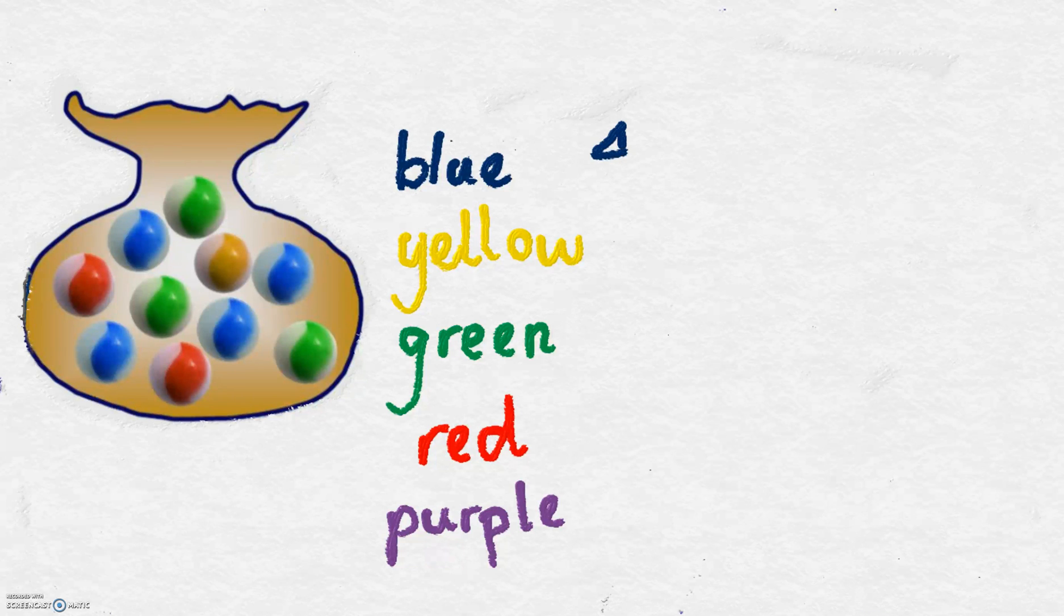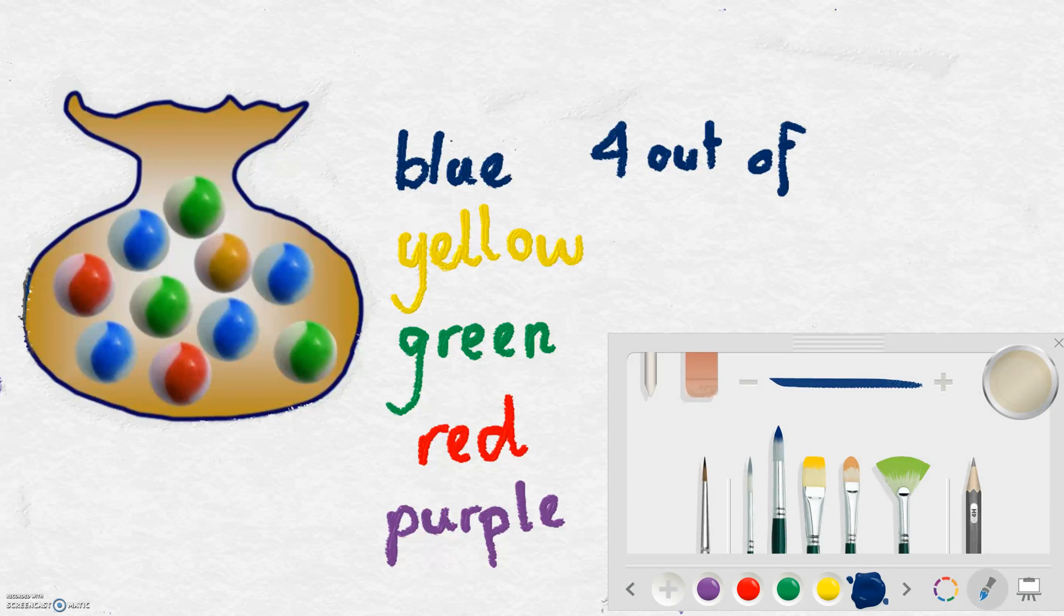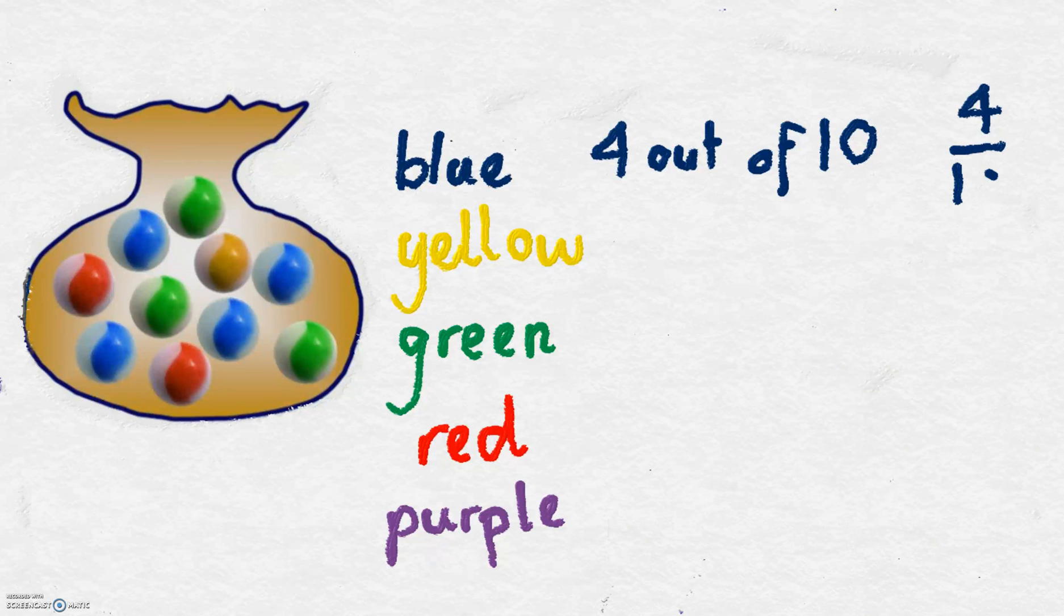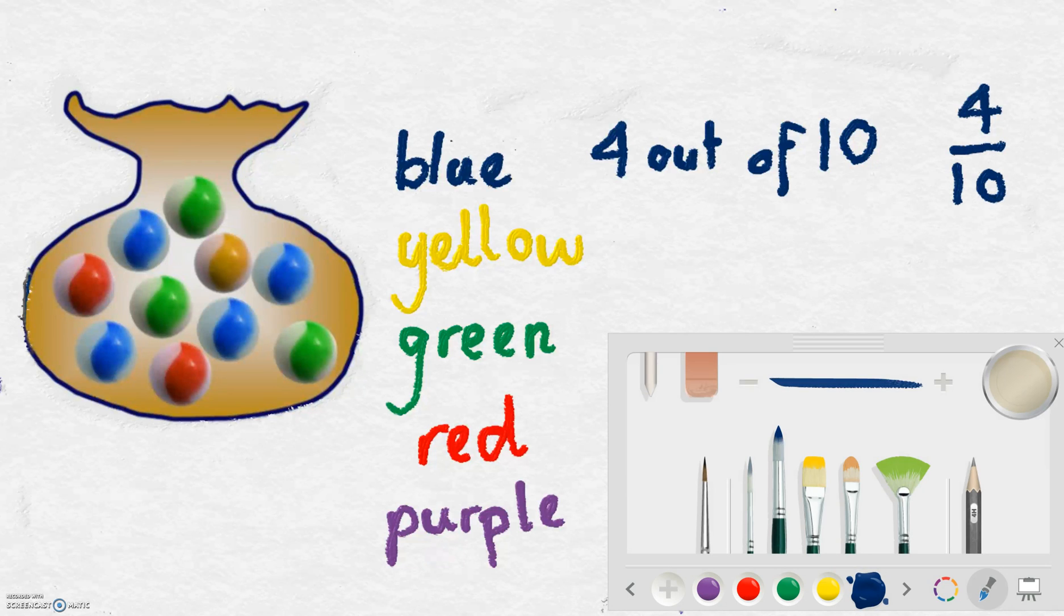So I have four out of... What is the total number of marbles? One, two, three, four, five, six, seven, eight, nine, ten. I have a four out of ten chance of selecting a blue marble. We can also write that as a fraction. Four out of ten chance of selecting a blue marble.